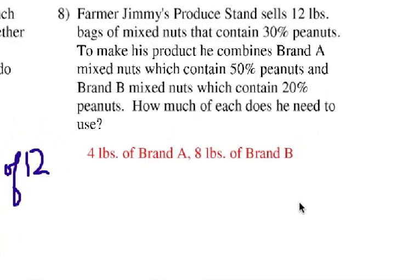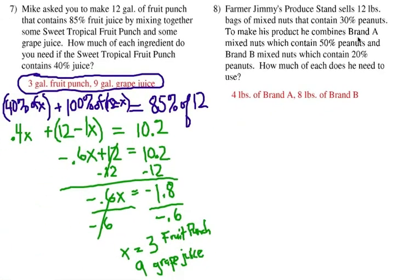Number 8. Farmer Jimmy's produce stand sells 12 pounds bags of mixed nuts that contain 30% peanuts. To make his product, he combines brand A mixed nuts, which contain 50% peanuts, and brand B, which contain 20% peanuts. How much of each does he need to use? Well, here's the answer, and here's how you'd work this out.